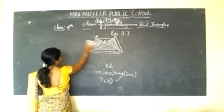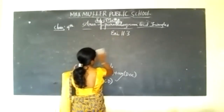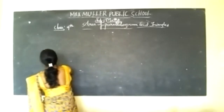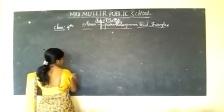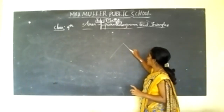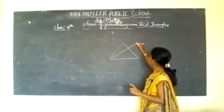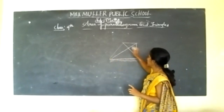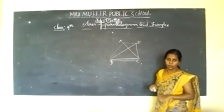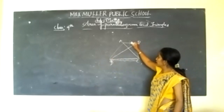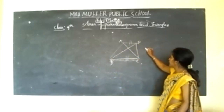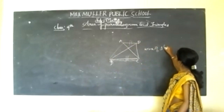Let us recall what we have learned about parallelograms and triangles. Whenever two triangles have a common base BC and lie between parallel lines, you can conclude their areas are equal — for example, area of ABC equals area of DBC.